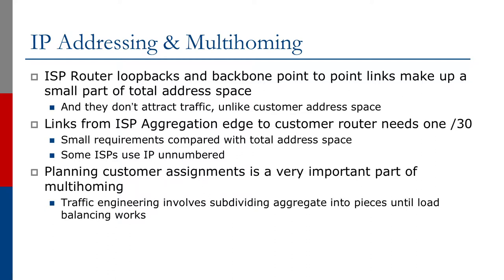The links from the ISP aggregation edge to the customer router need a single /30 in IPv4 and a /64 in IPv6. These are small requirements compared with the total address space. Some service providers don't even use addresses on these point-to-point links — in Cisco IOS, there is a feature called IP Unnumbered or IPv6 Unnumbered.